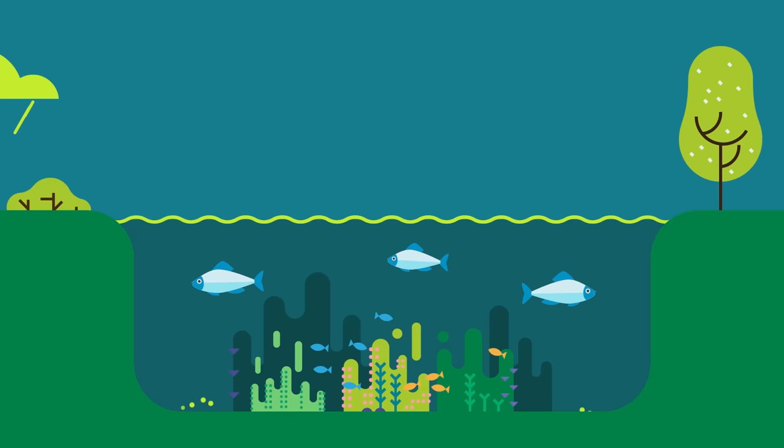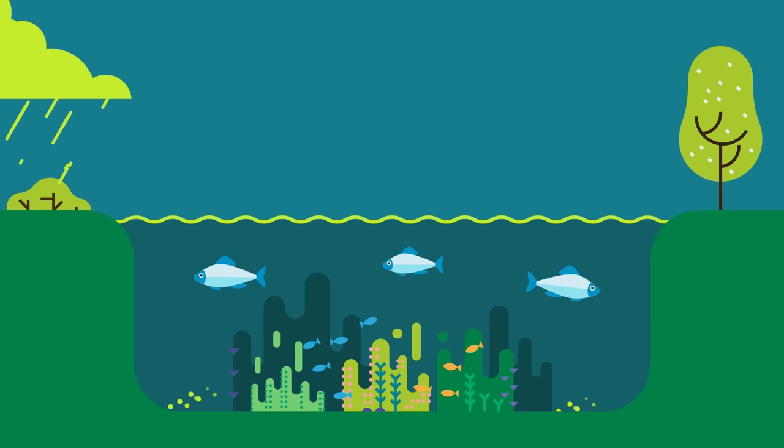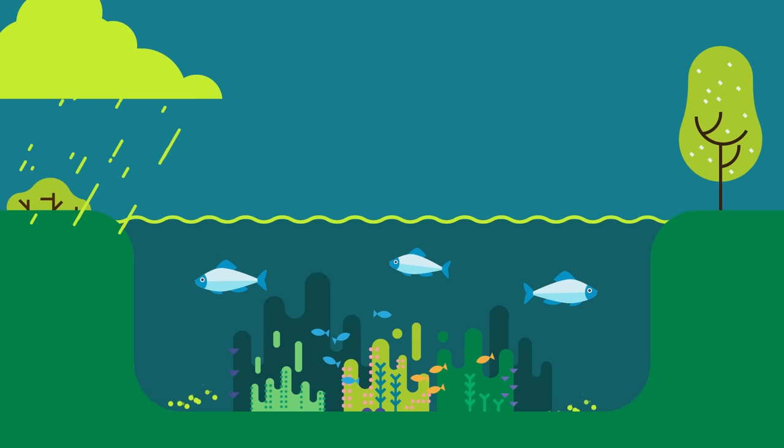Is this something we should be concerned about? According to the EPA, the ecological effects of acid rain are most clearly seen in aquatic environments such as rivers, streams, and lakes, where the lower pH water can be harmful to fish and other wildlife.